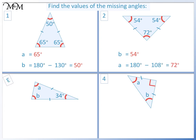Question 3. a and b are the same, so we'll start by subtracting 34 from 180. 180 take away 34 equals 146. a and b are equal, so we divide 146 by 2. 146 divided by 2 equals 73, so a and b are both 73 degrees.